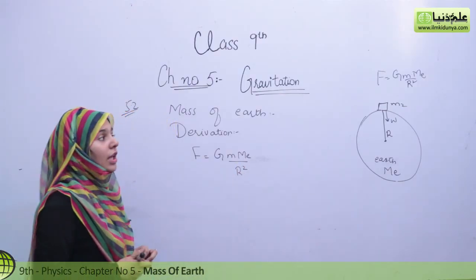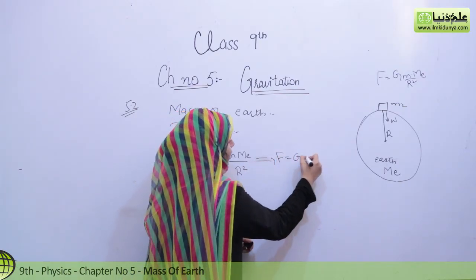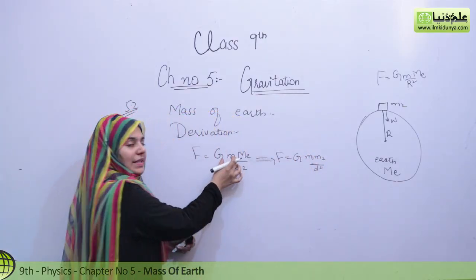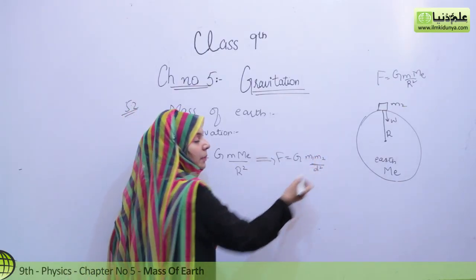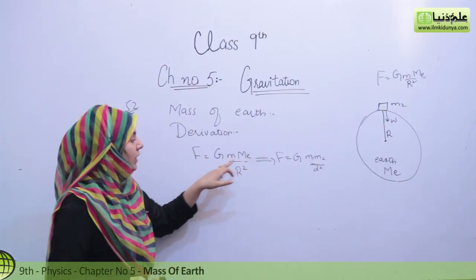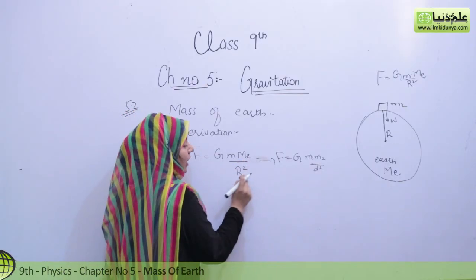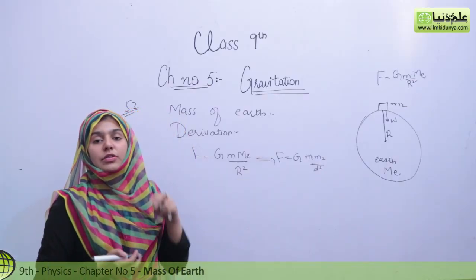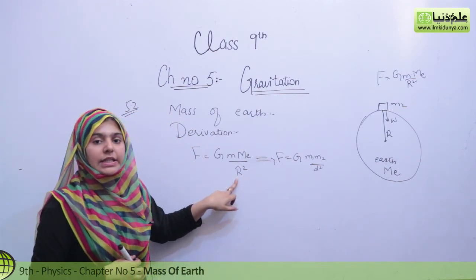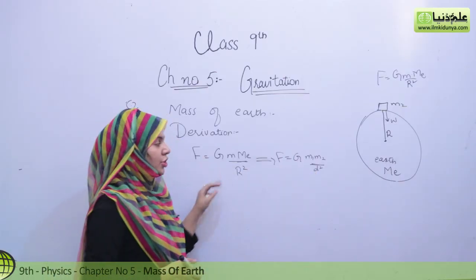This formula was modified from the original M1 M2 over D squared. Here we have M1 as small m, and M2 is denoted by capital M_E. We don't have to differentiate M from M_E. The radius of Earth — meaning the distance from the center — is R, capital R squared, so we write R squared here.